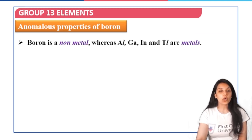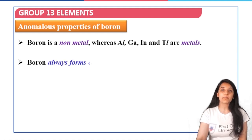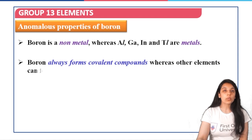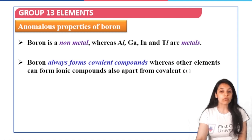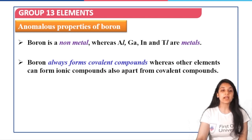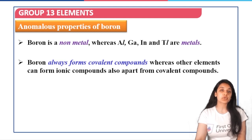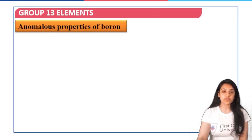Boron is a non-metal whereas aluminum, gallium, indium, and thallium are all metals. Boron always forms covalent compounds whereas other elements can form ionic compounds as well, apart from covalent compounds.